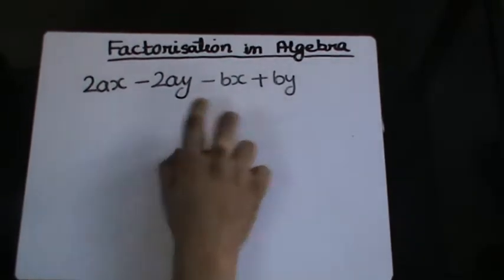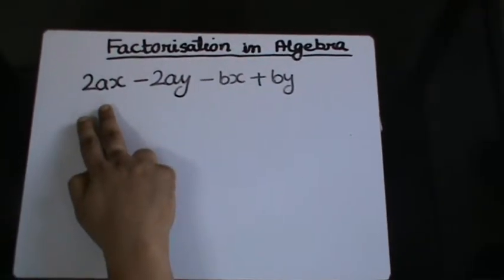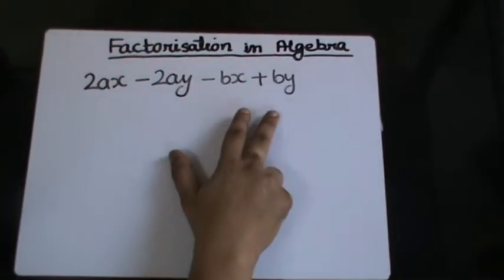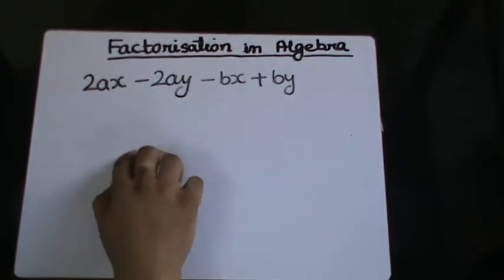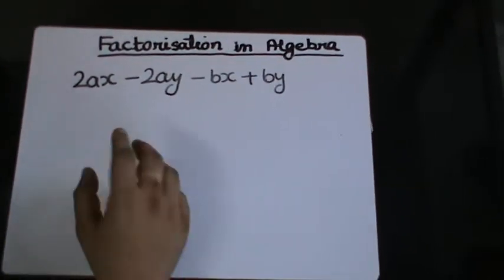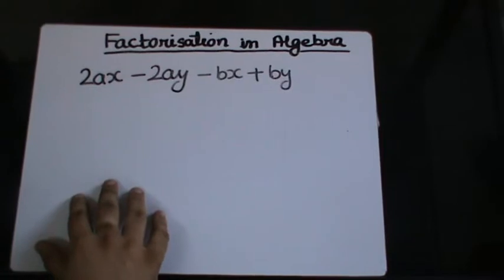If you see, there are four terms here and there is no element which is common in all the four terms, which gives me an indication that Type 1 factorization, taking out common, is not possible.